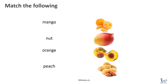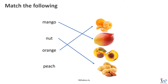Identify the items and match them. First one is a mango, then we have groundnuts, orange goes with orange fruit, peach goes with peach fruit. Excellent!